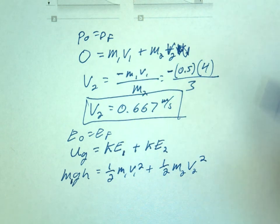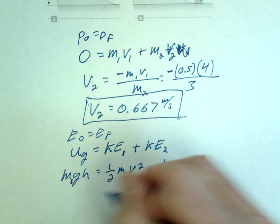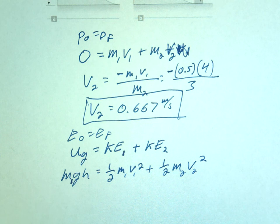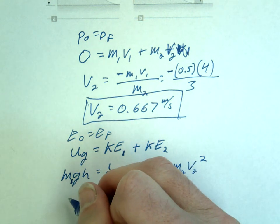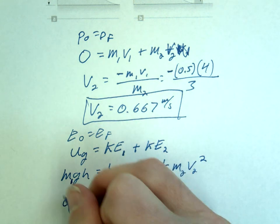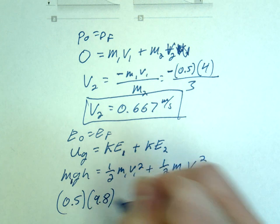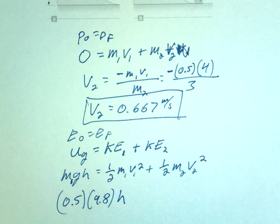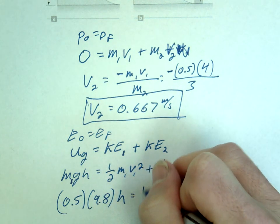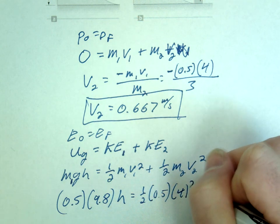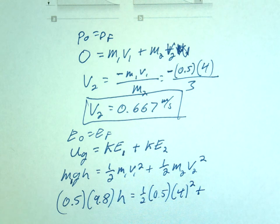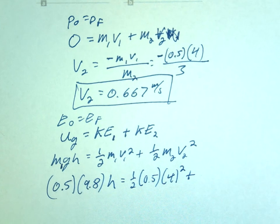And we are solving for the H here. Just divide by GM1. Let's just plug in numbers. So what was M1? 0.5, 9.8, H equals 1 half 0.5, 4 squared plus M2.